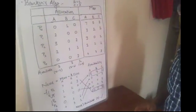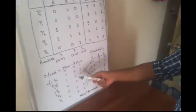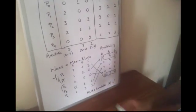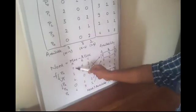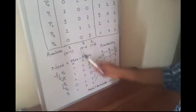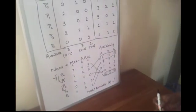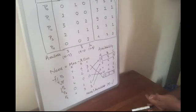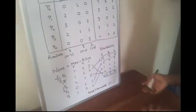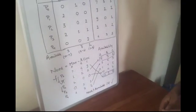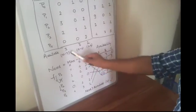So now we will start implementing this algorithm. We are picking our processes at random. Suppose we are picking P0. We will check its need with availability. Its need is 7, 4, 3 but availability is 3, 3, 2. We can see that need is more than availability, so we can't pick this process. For P1, its need is 1, 2, 2, which is less than availability 3, 3, 2.